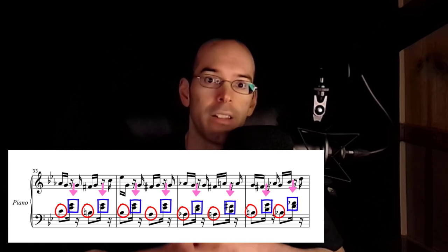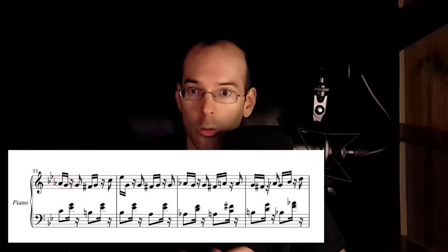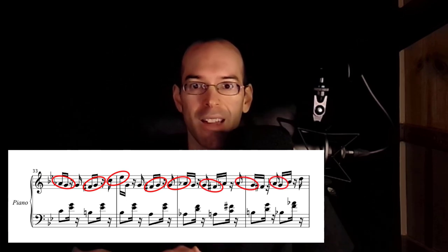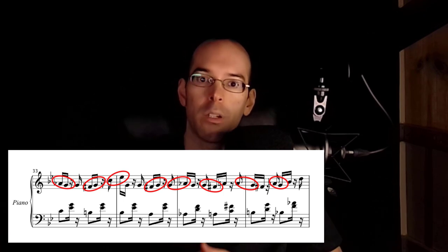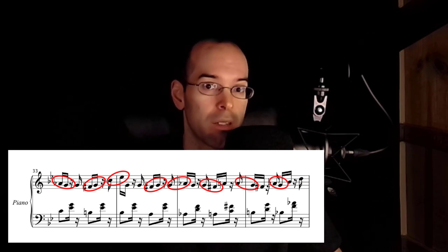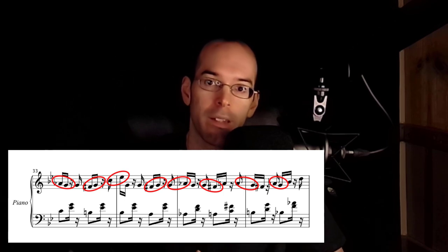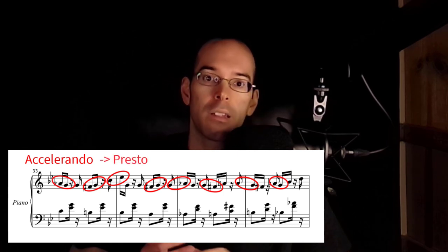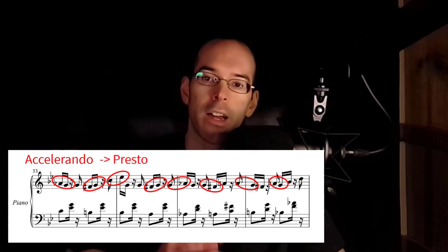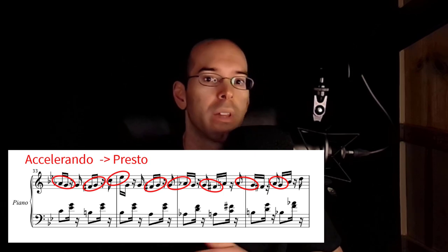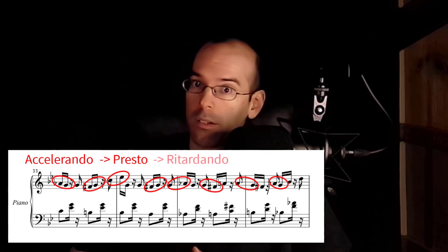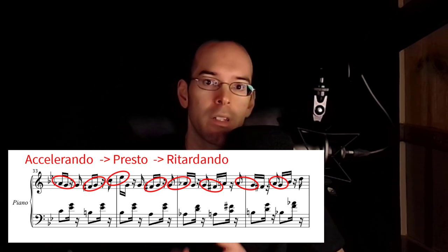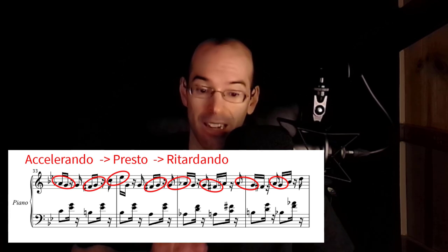Another trick I'm using is that in the right hand, I'm emphasizing two ascending or descending notes, which help shape the melody. The original MIDI rendering doesn't have this data, so the ear has a hard time distinguishing the melody without these dynamics. One final trick I'm implementing is turning this part into an accelerando section leading to presto — accelerando just means a gradual increase in speed. But then I gradually slow the piece down, called retardando, in order to bring it back to the original tempo. Can you hear how this accelerando really enhances the sense of anxiety in this section?